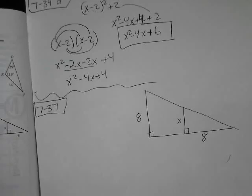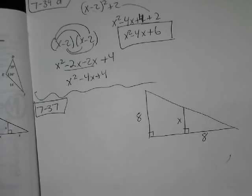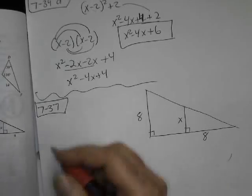Okay, this is problem 7-7. It says examine the diagram. The smaller triangle is similar to the larger triangle. Write a proportion and solve for x. It will be helpful to draw the two triangles separately on your paper.